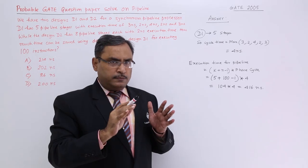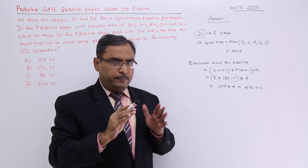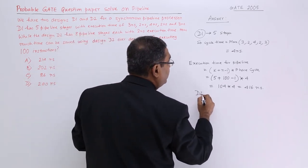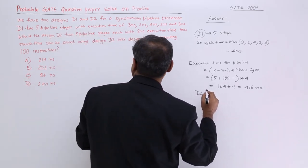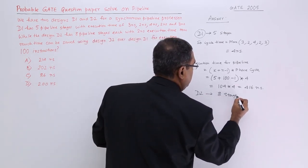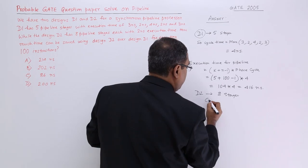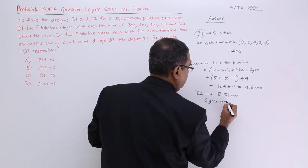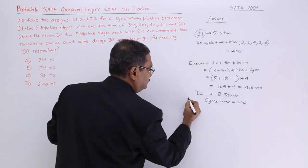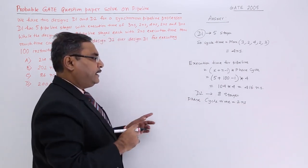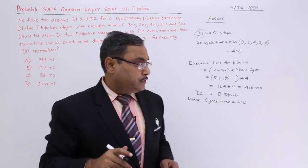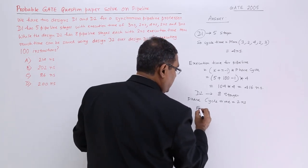Remember that is the execution time required by D1 pipeline. What about the D2 pipeline? In case of D2 the phases are I think the same, 8 phases or stages and the cycle time is 2 nanosecond. The phase cycle time is 2 nanosecond. For that execution time.